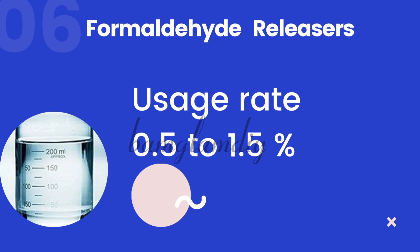Now let's talk about formaldehyde releasers. Their usage rate is between 0.5 to 1.5 percent — in some cases and some literature online you will see 0.5 to 1 percent; only a few sources increase it up to 1.5 percent. So it is still somewhat low, but not as low as the paraben family.